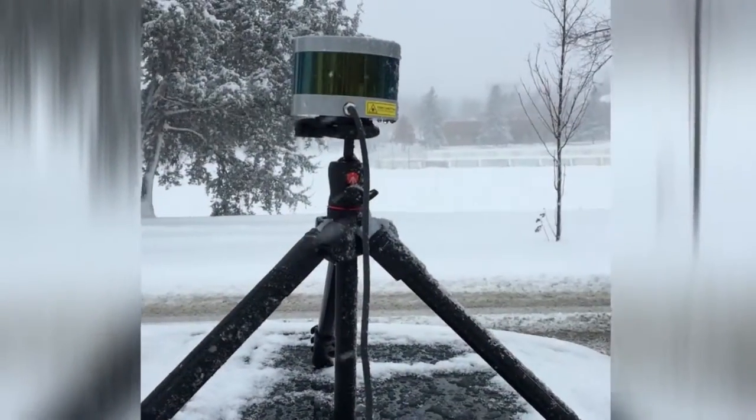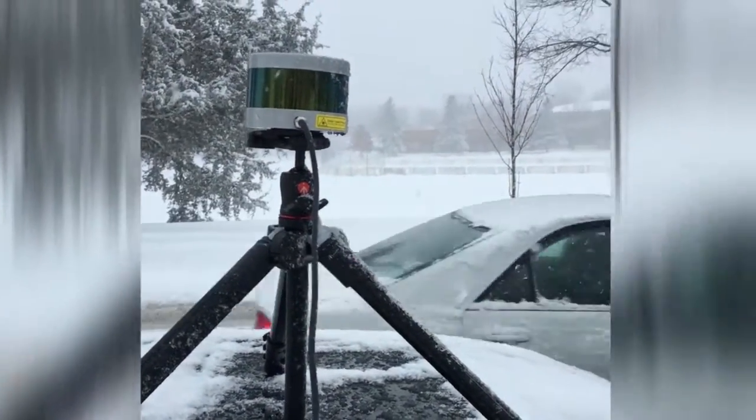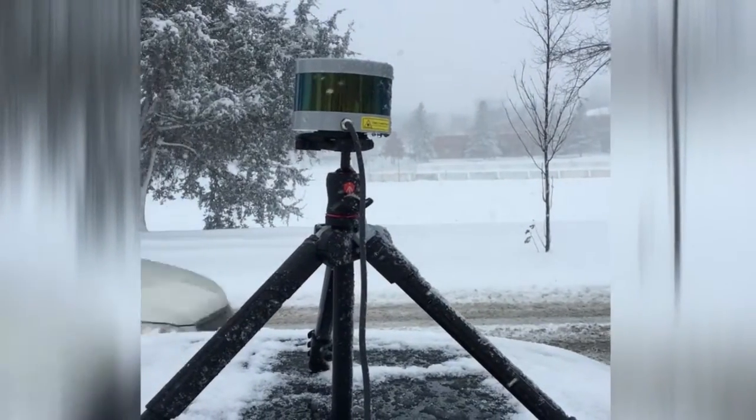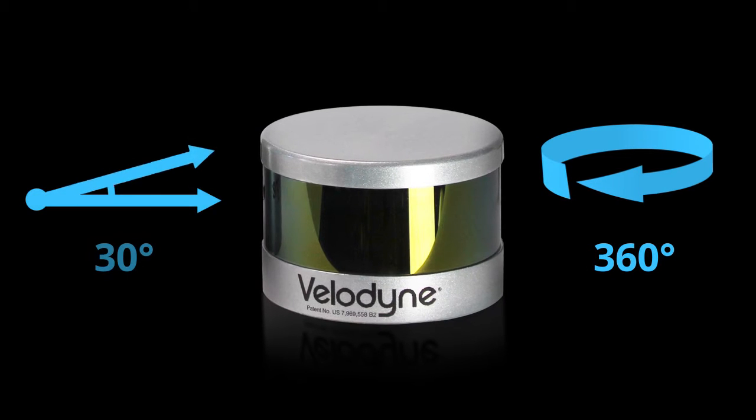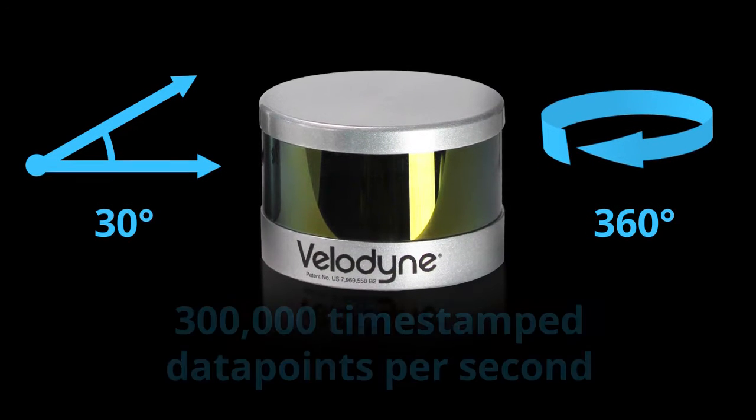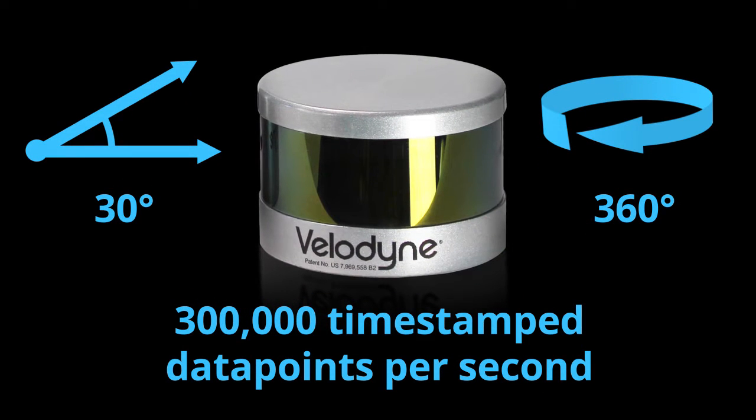So I mounted a single VLP 16 three-dimensional laser scanner to the top of my car. It has a 360-degree horizontal field of view and a 30-degree vertical field of view, providing 300,000 time-stamped data points per second.